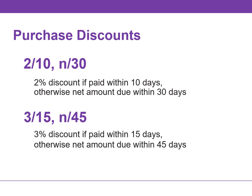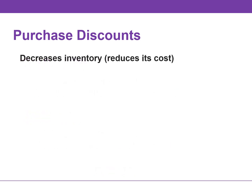Likewise, if the credit terms are 3/15, net 45, a 3% discount is available if payment is made within 15 days; otherwise, the net amount is due within 45 days. The term net means the amount due after subtracting any returns, allowances, and partial payments. When the buyer pays an invoice within the discount period, the amount of the discount decreases inventory. Remember, companies record inventory at cost, and by paying within the discount period, the buyer has reduced its cost.